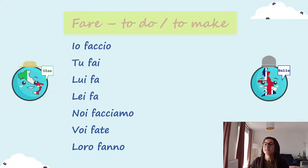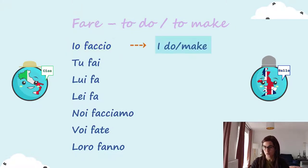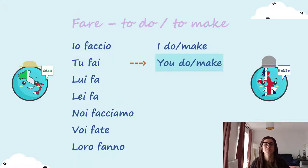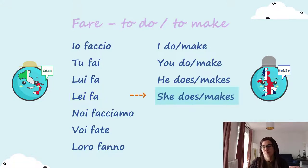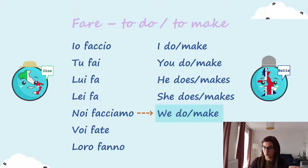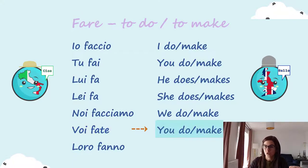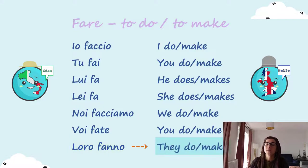Let's start with fare. Fare is to do, to make. Io faccio — I do, make. Tu fai — you do, you make. Lui fa — he does, he makes. Lei fa — she does, she makes. Noi facciamo — we do, make. Voi fate — you do, you make. Loro fanno — they do, they make.